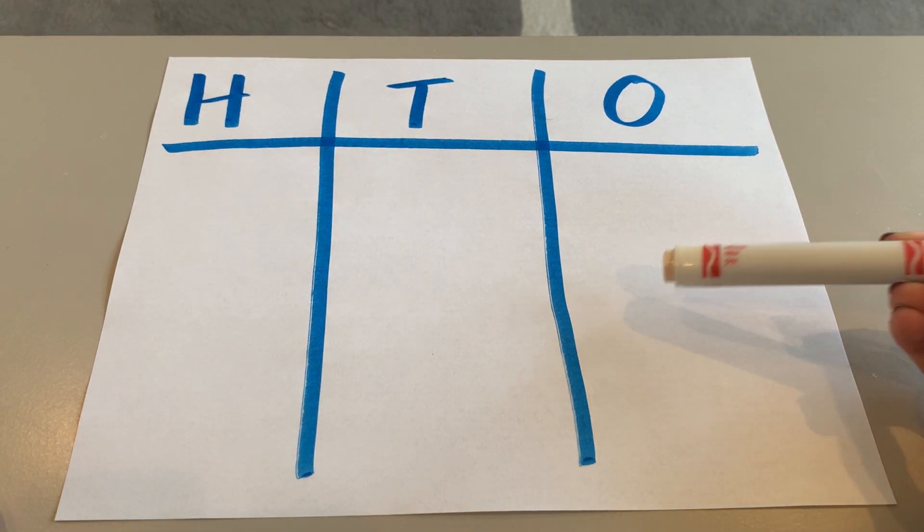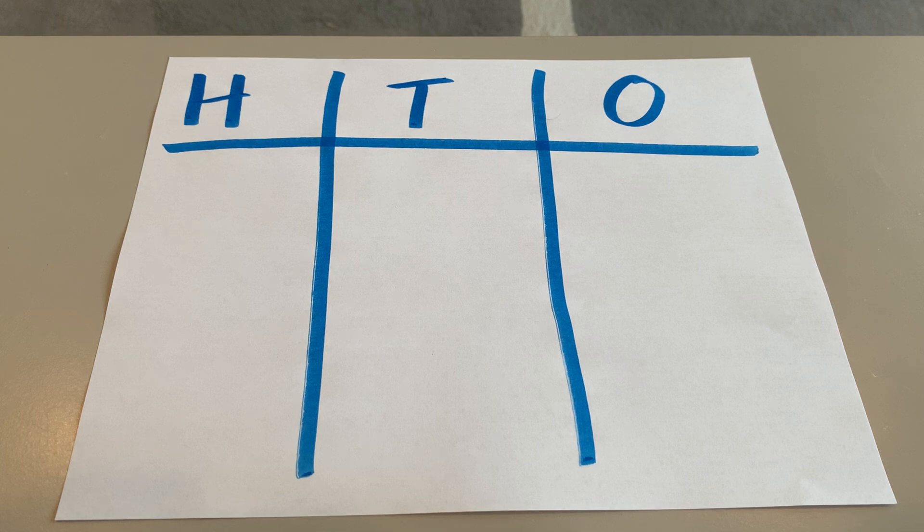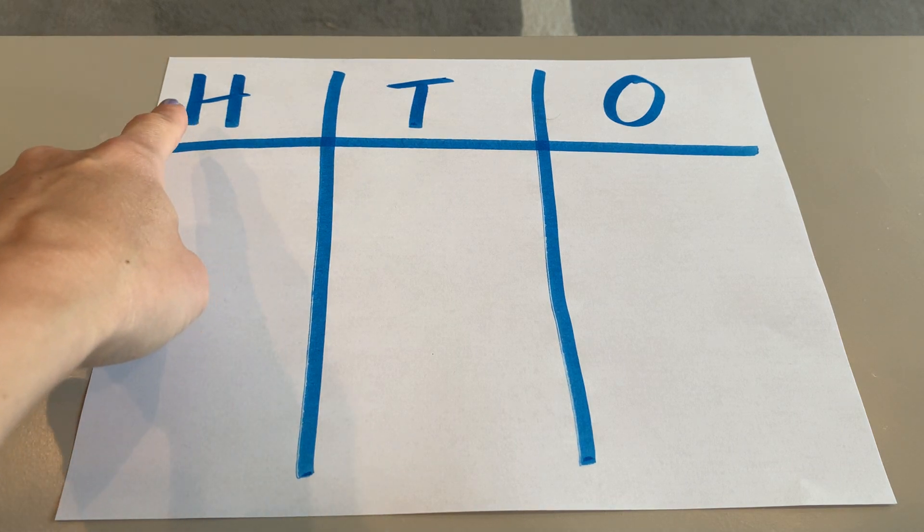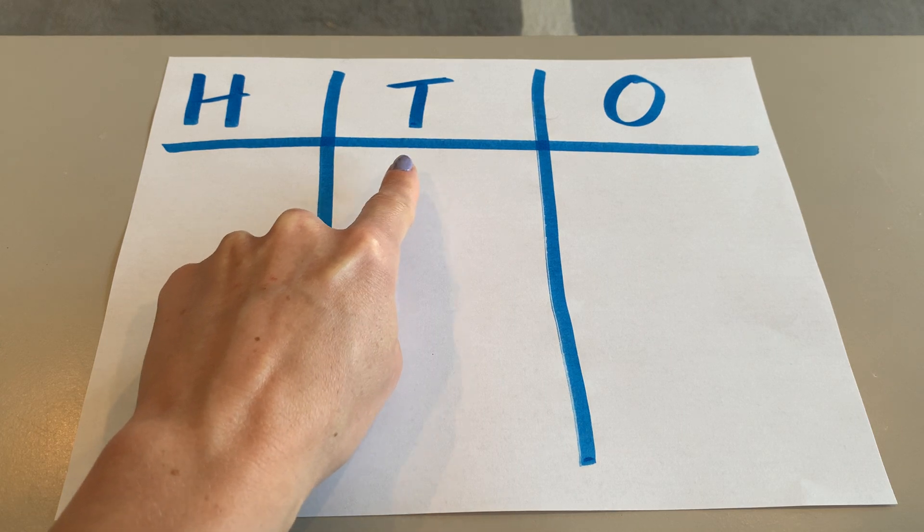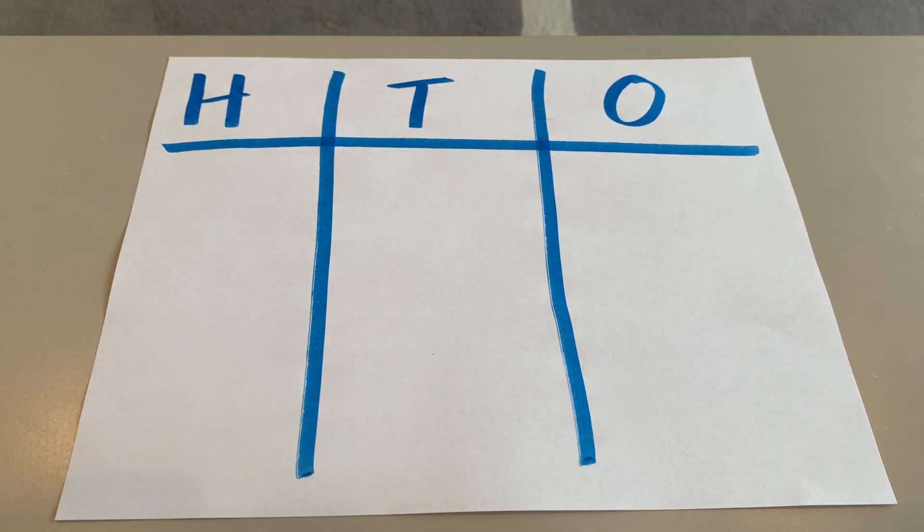We're going to make an HTO place value chart to draw some numbers together. The H stands for hundreds, T stands for tens, and the O stands for ones.